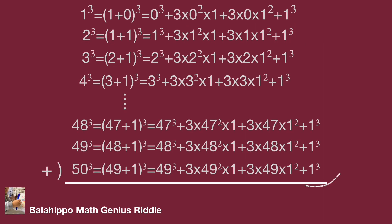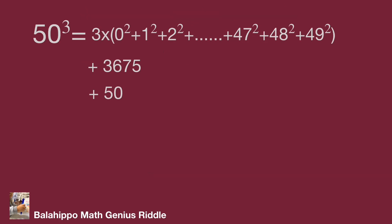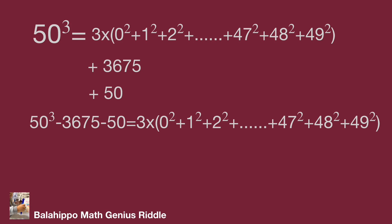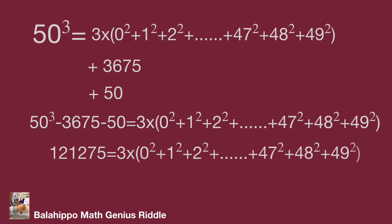Now let's check the last 1 cubed items. The sum of these 50 one-cubed terms equals 50. Put 50 into the right side of the equations. Then we move all the numbers to the left side, giving us: 50 cubed minus 3675 minus 50 equals 3 times bracket (0 square plus 1 square plus 2 square plus dot dot dot plus 48 square plus 49 square) bracket. Calculating: 121275 equals 3 times our question. Dividing both sides by 3, the value for the question is 40425.